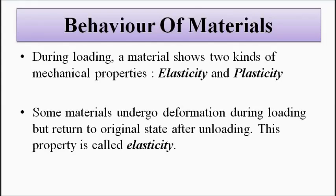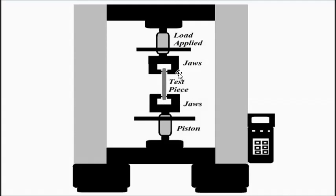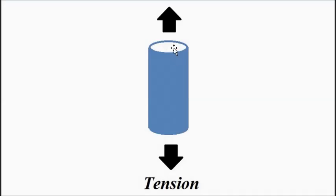The tensile test is carried out using a tensile testing machine which looks something like this. It consists of two jaws which hold the test piece of uniform cross-section, and this machine tries to pull the test piece from both ends in opposite directions.